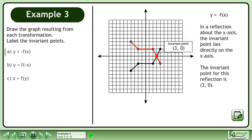In a reflection about the x axis, the invariant point lies directly on the x axis. The invariant point for this reflection is on the x axis.